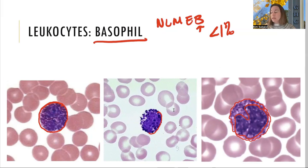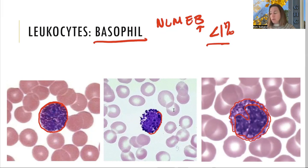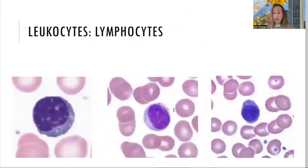Basophils are less than one percent of white blood cells and are involved with allergies — specifically, they promote inflammation by releasing heparin and histamine from their granules. When you have an allergic reaction, these cells increase blood flow and inflammation. Their giveaway is that they are a dark, lumpy cell because the stain is so heavy it obscures the nucleus.